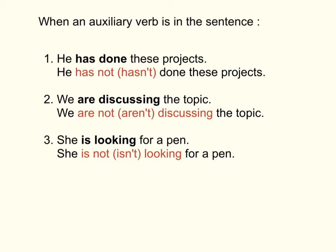或者简写hasn't. Number two: We are discussing the topic. 那我们呢，一齐谈着这个题目，discussing是谈着、商议着。那我们找到那个auxiliary verb就是are，那我们就加个not字在后面，变成we are not，或者we aren't discussing the topic. 那我们不是讲这个题目了。